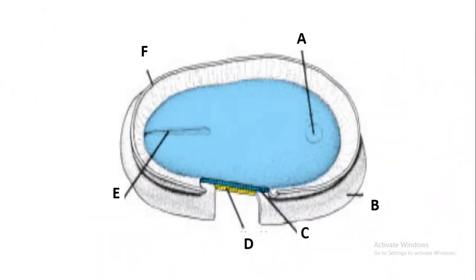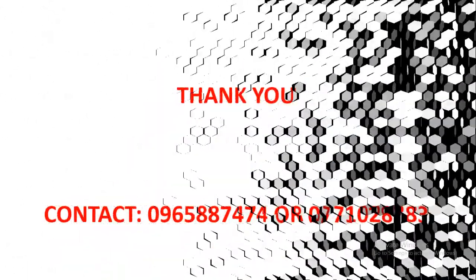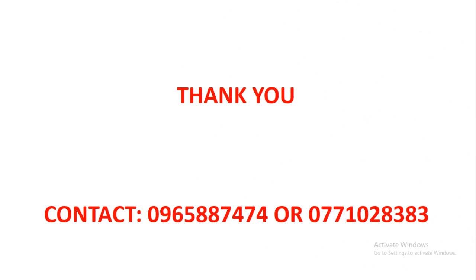A is the buccopharyngeal membrane, the future part of the mouth. B is the walls of the yolk sac, where primordial germ cells originate. C is the epiblast, below which is the hypoblast. E is the primitive streak and F is the cut edge of the amnion. Thank you for joining me — make sure you register with Excel Academy and subscribe to our YouTube channel.